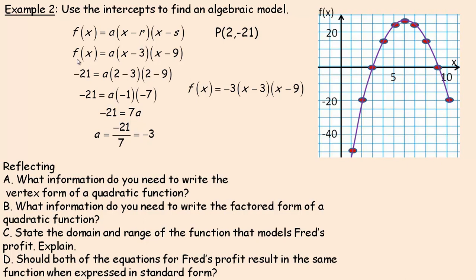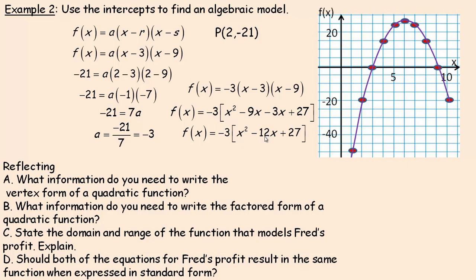Substituting A equals negative 3 gives our profit function in factored form: f(x) = -3(x - 3)(x - 9). The last question asks whether both equations result in the same function in standard form. Expanding: (x - 3)(x - 9) gives x² - 9x - 3x + 27 = x² - 12x + 27. Distributing the negative 3 gives the standard form, which is the same as expanding the vertex form — they must be identical.